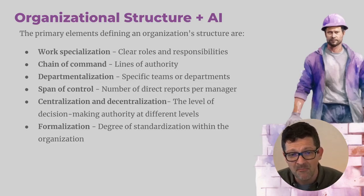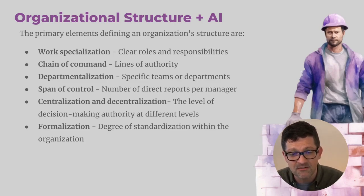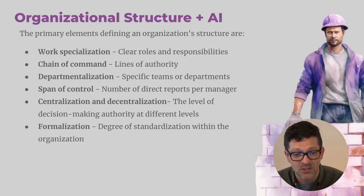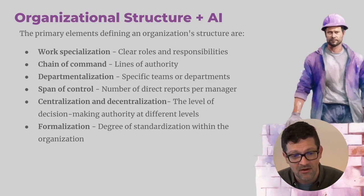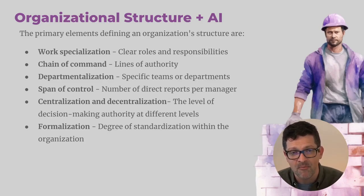Here are the main parts of organizational structure. Work specialization — clear roles and responsibilities. Chain of command — the lines of authority. Departmentalization — specific teams or departments. Span of control — number of direct reports per manager. Centralization and decentralization — how decision-making authority will run at different levels. And then formalization — the degree of standardization across all of your departments and teams.